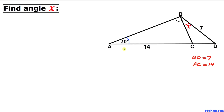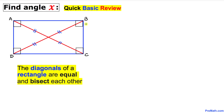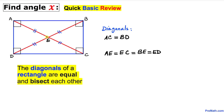Let's go ahead and get started with the solution with a quick basic review. The diagonals of rectangle ABCD are equal in length and bisect each other. That means the two diagonals AC and BD are equal, and where they intersect at point E, line segment AE equals EC equals BE equals ED.